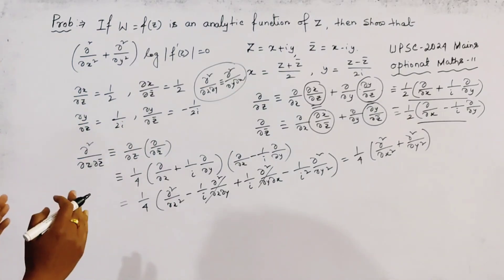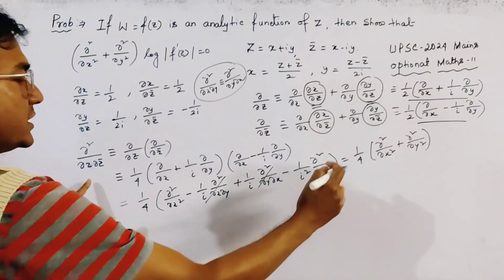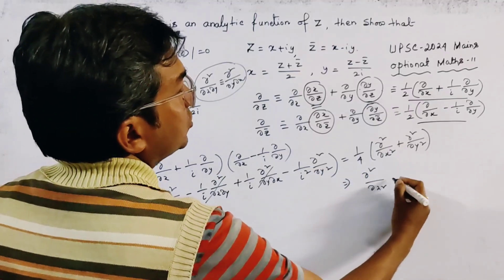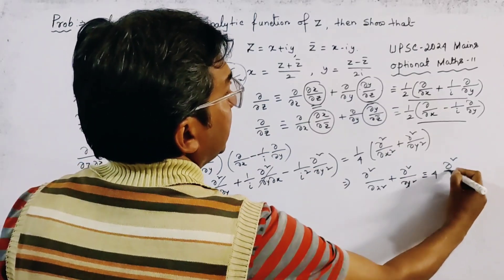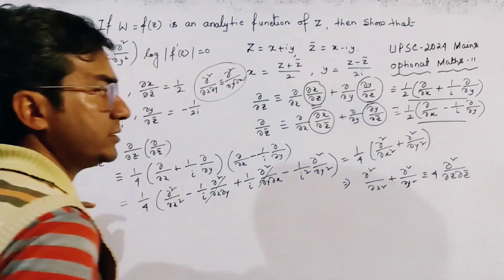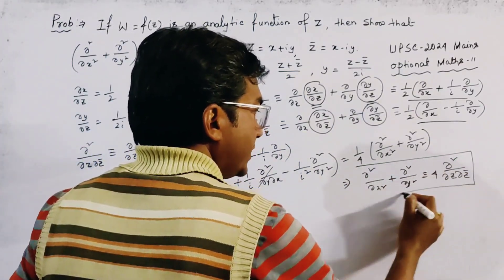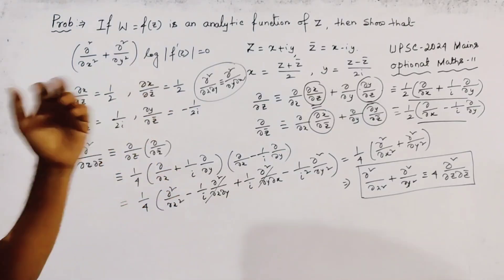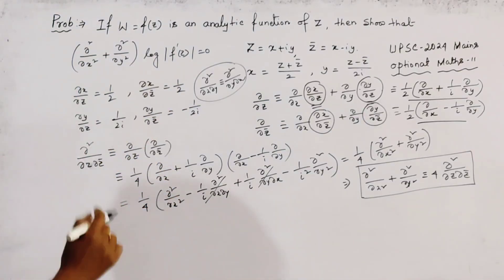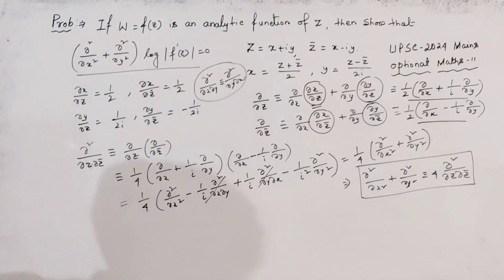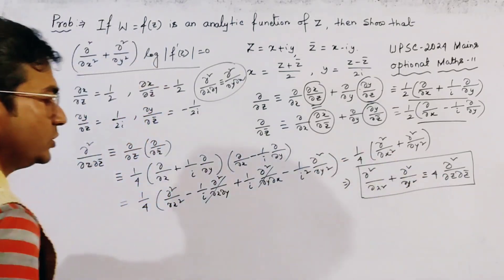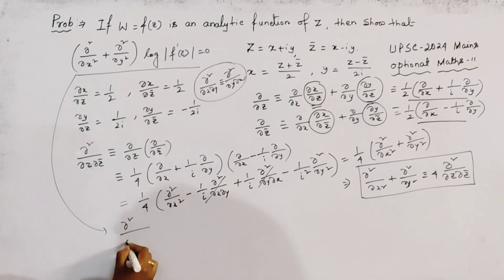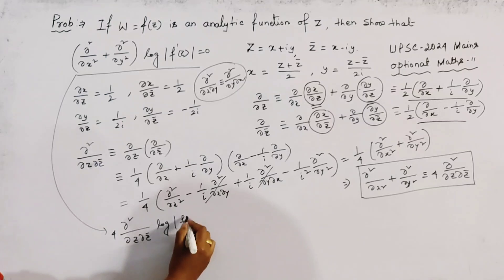So we get the important relation: ∂²/∂x² + ∂²/∂y² = 4 · ∂²/∂z∂z̄. This is a very important result of complex analysis. Our problem now becomes: prove 4 · ∂²/∂z∂z̄ of log|f'(z)| = 0.